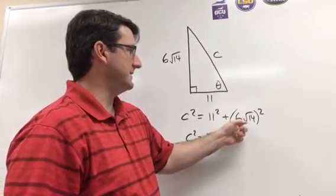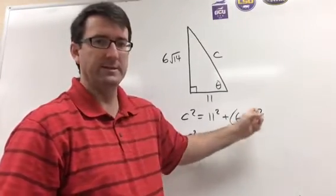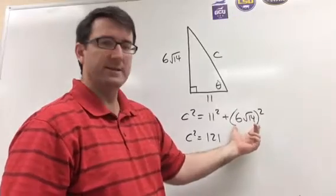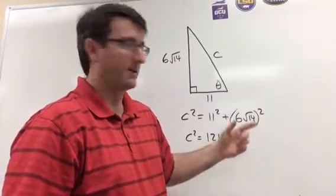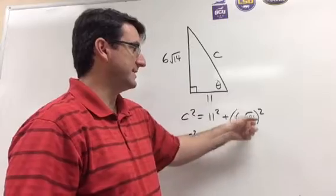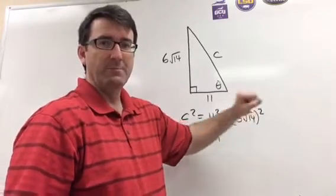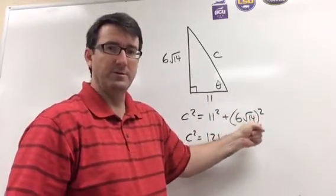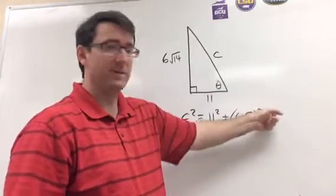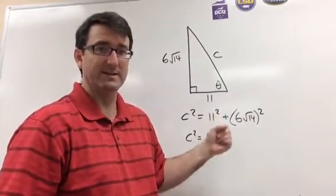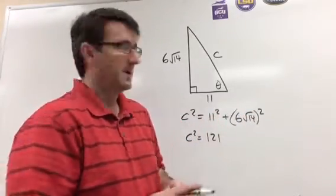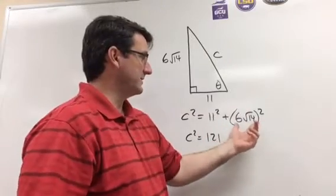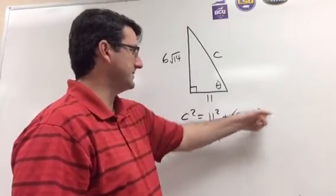6 times the square root of 14 squared. If you plug this into the calculator, make sure that you put those parentheses around there. Otherwise, if you just put 6 square root of 14 squared, your calculator is not going to know to do the order of operations. It's going to square this first and then multiply by 6 without ever squaring the 6. That's not what we want. We want to square this whole thing.